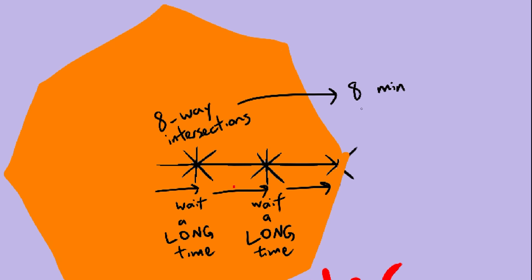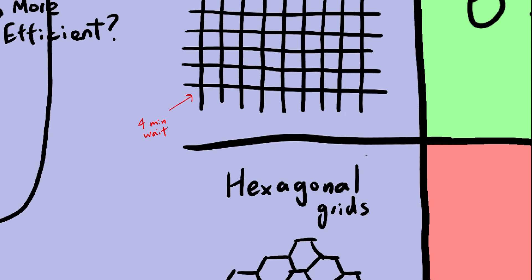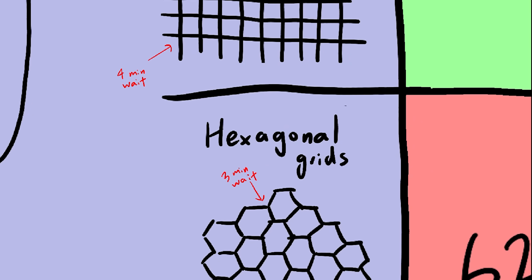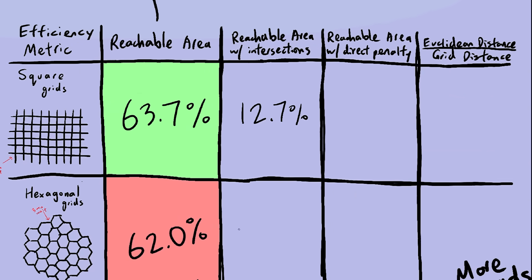So here's the plan. Instead of our driver going through each intersection instantly, we will make them wait at each intersection, and the amount of time they spend waiting will increase if there are a lot of roads at that intersection. Let's just say that intersections with x roads will have an x-minute wait. So square grids will have a four-minute wait, and hexagonal grids will have a three-minute wait. Well, if you do the calculations, hexagonal grids end up winning over square grids. Previously, the two reachable areas were pretty similar in size. Square grids were a little bit more efficient. But since hexagonal grids only have three-way intersections instead of four, they win pretty decisively.